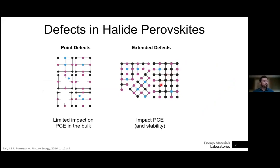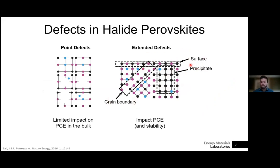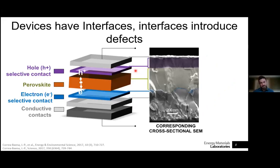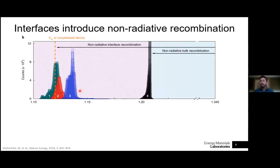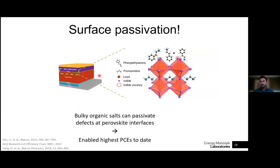However, defects can still impact device performance via extended defects such as aggregates of precursor materials, grain boundaries, surfaces, and even point defects at surfaces, which may contribute to non-radiative recombination. In a device we are bound to have interfaces — we need electron and hole transporting materials to extract carriers — and it has been shown that the presence of interfaces impacts recombination, visible as drops in open circuit voltage and in photoluminescence. Reducing this recombination at interfaces enables higher power conversion efficiencies.